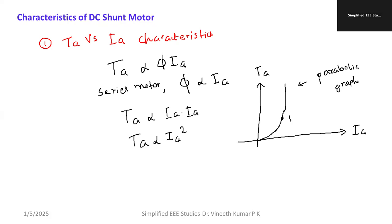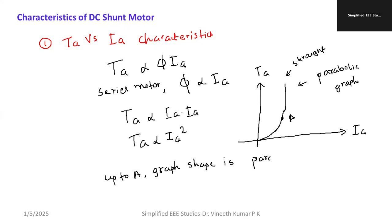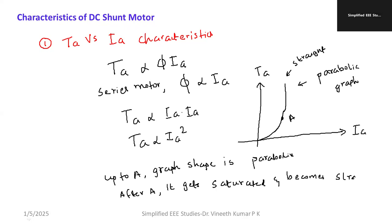Up to point A the graph shape is a parabolic curve. After point A, the core gets saturated and the graph becomes a straight line.